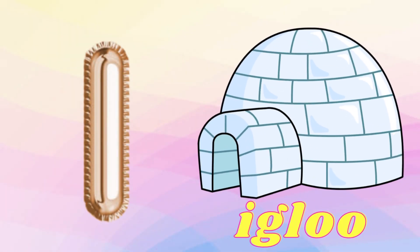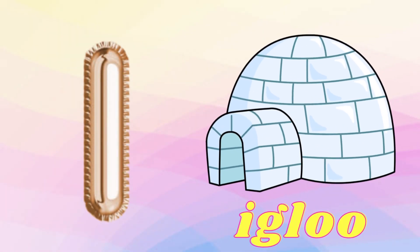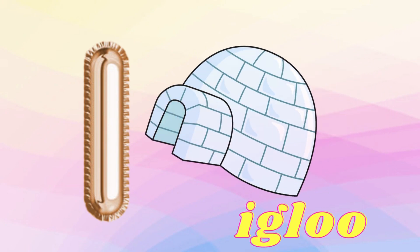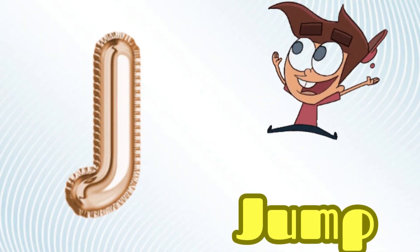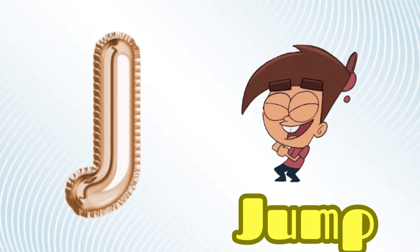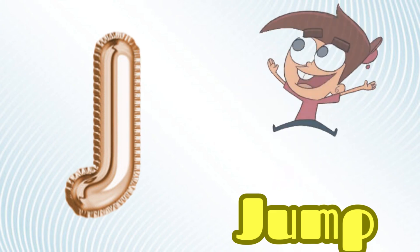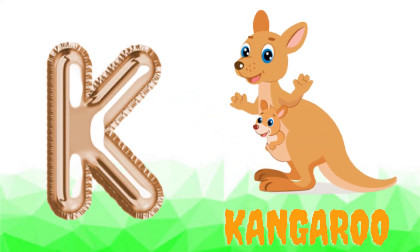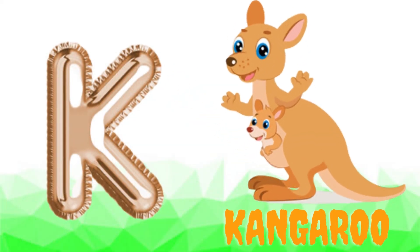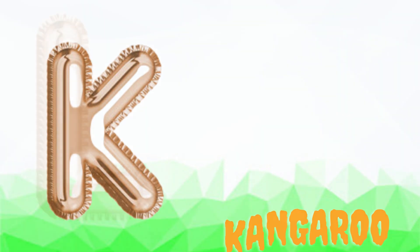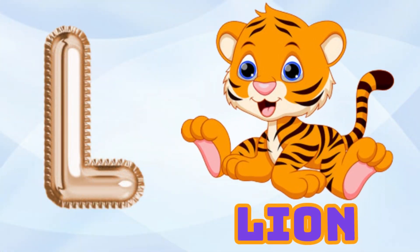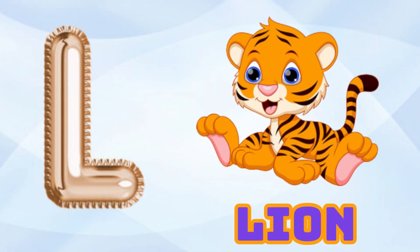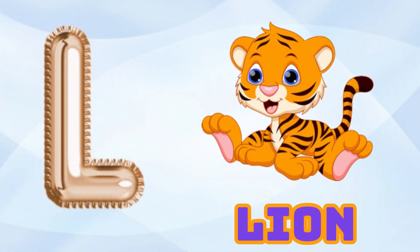I is for Igloo, I-I-Igloo. J is for Jump, J-J-Jump. K is for Kangaroo, K-K-Kangaroo. L is for Lion, L-L-Lion.